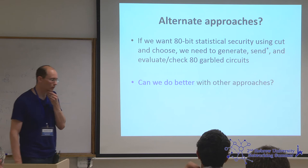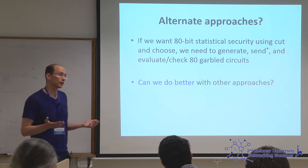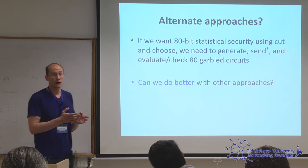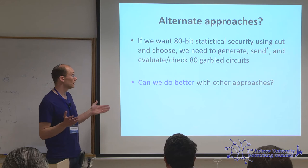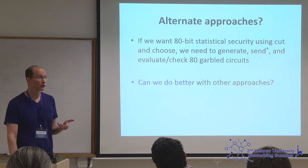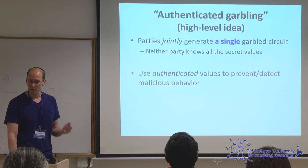One problem with the cut-and-choose approach to malicious security is that for 80-bit security you have to send 80 garbled circuits, and these garbled circuits are about a hundred times bigger than the circuit itself. If the circuit already has a billion gates, you're paying quite a cost. We looked at the feasibility of other approaches for obtaining malicious security, and in a series of papers now available on ePrint we examine what we call authenticated garbling.